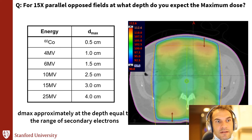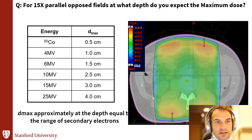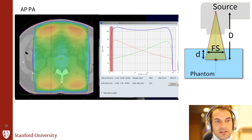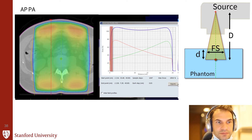Here's a question: for 15x parallel opposed fields, at what depth do you expect to see the maximum dose? Here is a picture of parallel opposed radiation fields — you see there's higher dose near the edges and lower dose in the middle. From the table, the answer is about 3 cm for 15x. Even though there are two beams, they don't really change the shape of the PDD curve. Each anterior-posterior beam is one PDD curve and the posterior-to-anterior beam is another. When they add up, you still get maxima around the same position as in the individual beams. The physics between the water tank and the patient is still approximately the same.